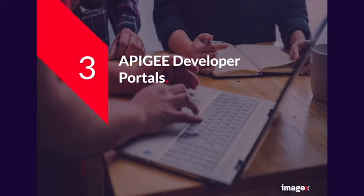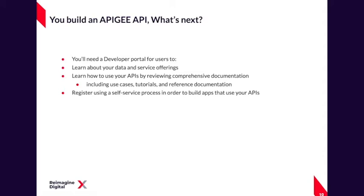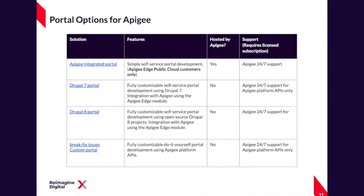Next, let's talk about Apigee's developer portals. So you've built your first Apigee API — what's next? Well, the major consumer of your API will most likely be developers, and they will need to learn about your data services and API offerings. They'll need to interact with the system, consume the APIs, build test applications, go through tutorial and training material, and essentially consume the product. They'll also need to transact with you in order to register as users, and may need to pay for your services. Luckily with Apigee, there are several options as far as developer portals are concerned, ranging from a fully integrated out-of-the-box solution through to fully custom.